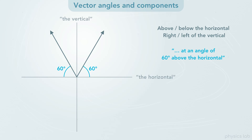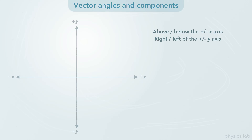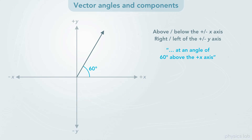So if we see an angle described like this, it probably means we're only working with positive vector components and positive reference angles. A better way to describe angles is to specify above or below the positive or negative x axis, or right or left of the positive or negative y axis. If a problem says that a vector is at an angle of 60 degrees above the positive x axis, then we must be working with an xy coordinate system, and this is the only possible direction for the vector.